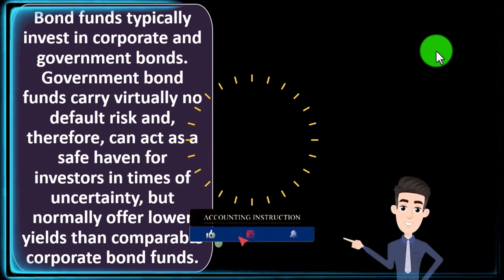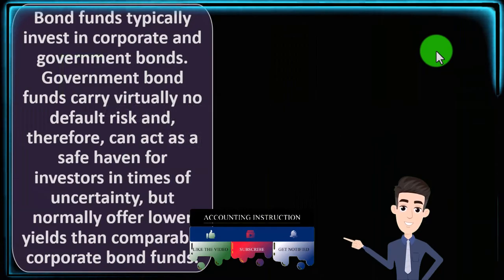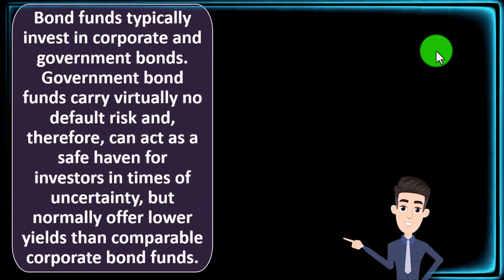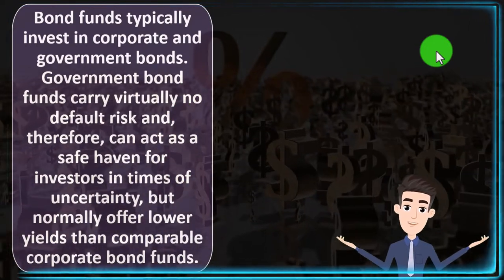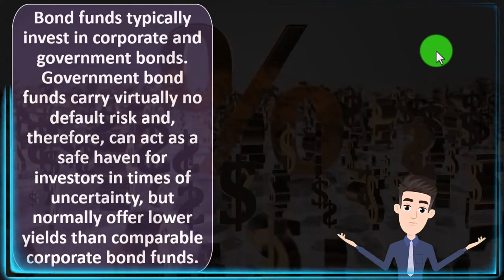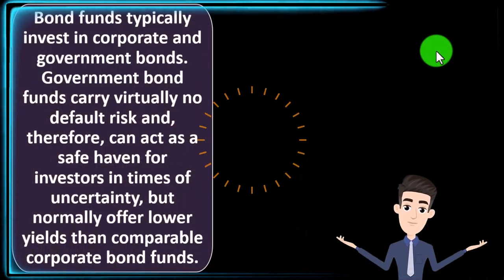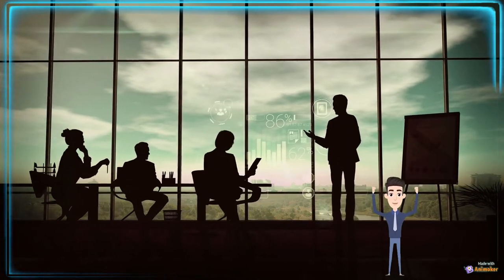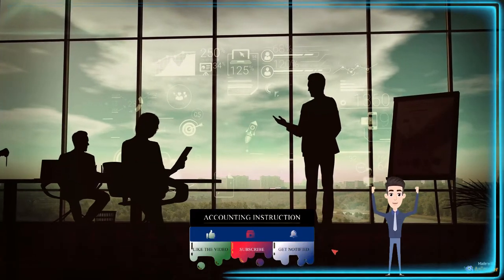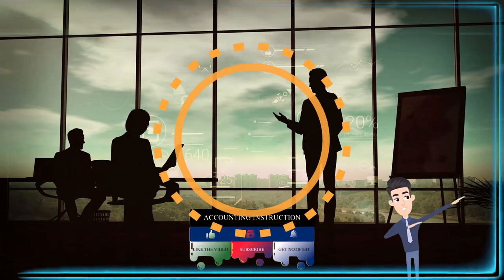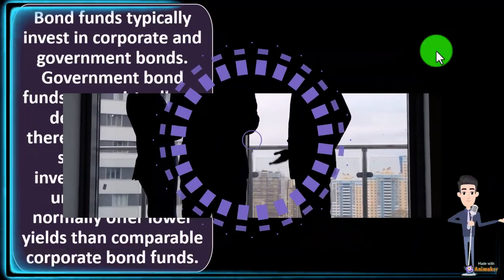Bond funds typically invest in corporate and government bonds. Government bond funds carry virtually no default risk and can act as a safe haven for investors in times of uncertainty, but normally offer lower yields than comparable corporate bond funds. When thinking about bonds, we're essentially lending money to the issuer — either a government entity or a corporation. US government bonds are used as a baseline because the government can basically print money or tax people, making it almost impossible for them to default, which also means lower returns for investors.